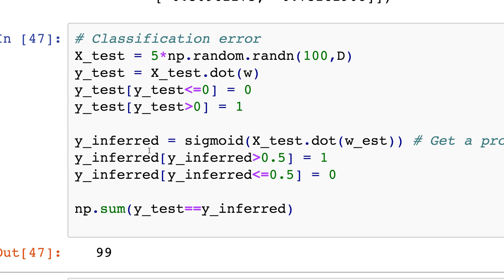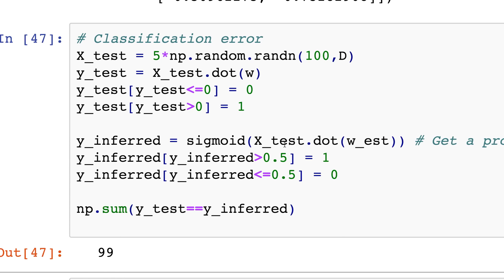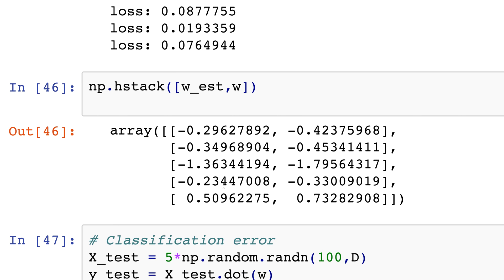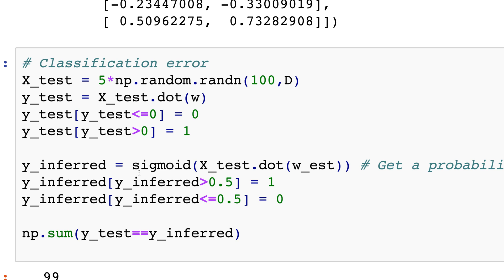So the way that you infer it is you go sigmoid of x underscore test multiplied with my w, with my estimated w. So which is what my TensorFlow spat out. So y inferred over here will give you a number between 0 and 1, so I suppose the probability of y being 1.